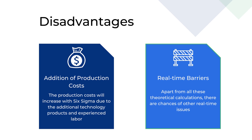The fourth disadvantage is real-time barriers. Apart from all these theoretical calculations, there are chances of other real-time issues. It is not assured that only 3.4 defects per million will be encountered. There are chances of more barriers developing while in production. These barriers are hard to predict as they will not be the same for every business. Focusing on development will have more such problems arising, and all of them require proper strategies to solve effectively.